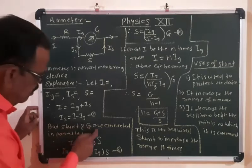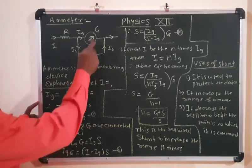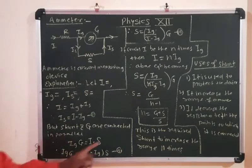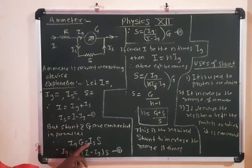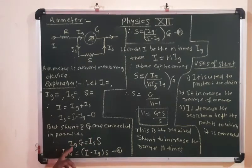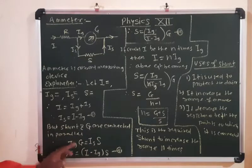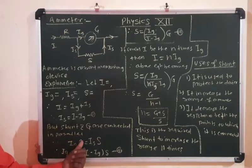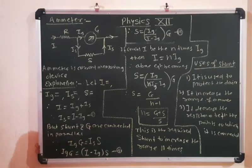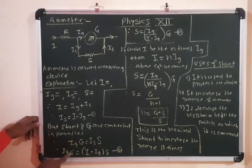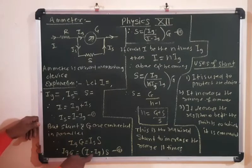Since the shunt and galvanometer are connected in parallel, according to Ohm's law V = IR, we have Ig·G = Is·S, where G is the resistance of galvanometer and S is the resistance of shunt. Substituting Is = I − Ig into this equation gives Ig·G = (I − Ig)·S (equation 2).